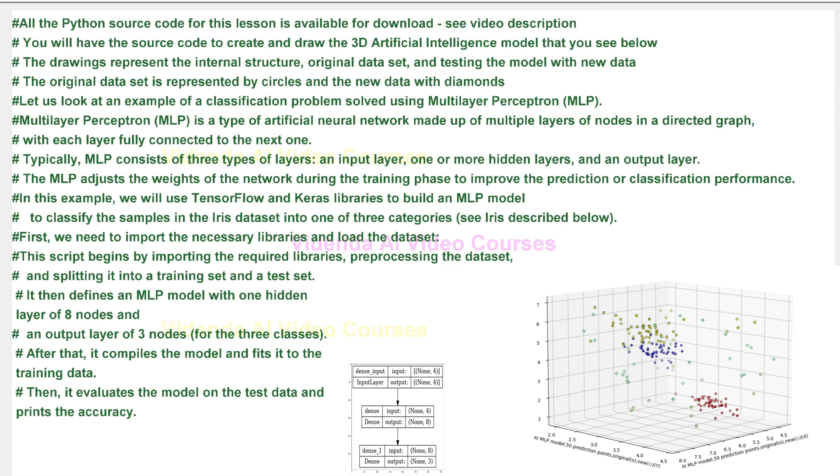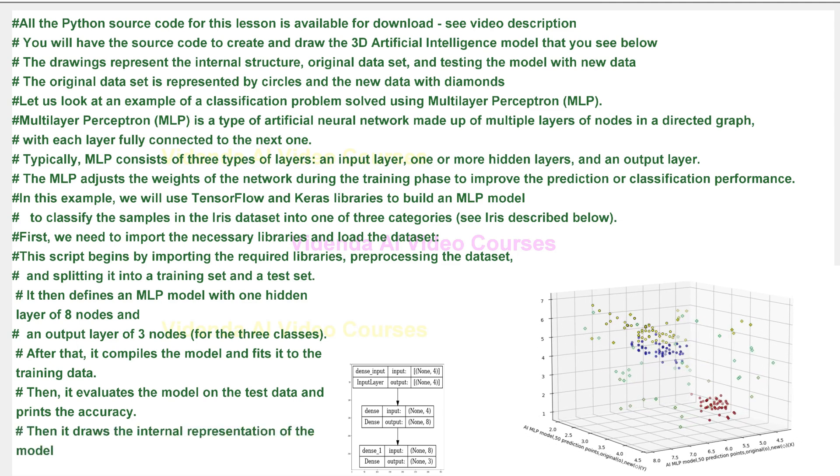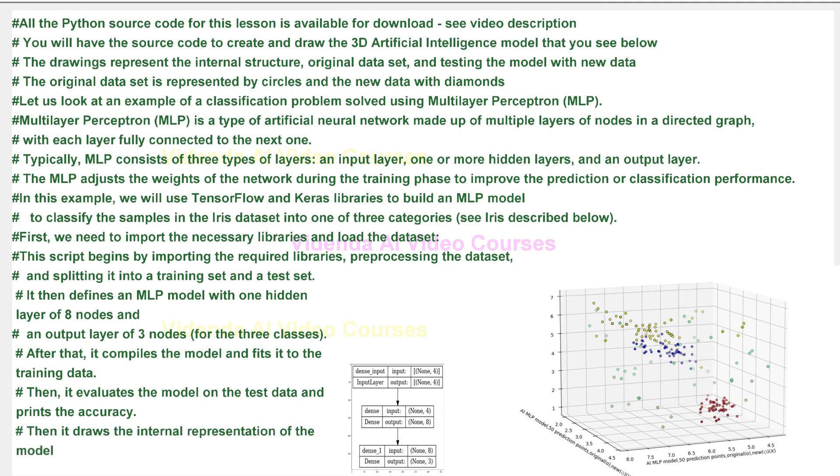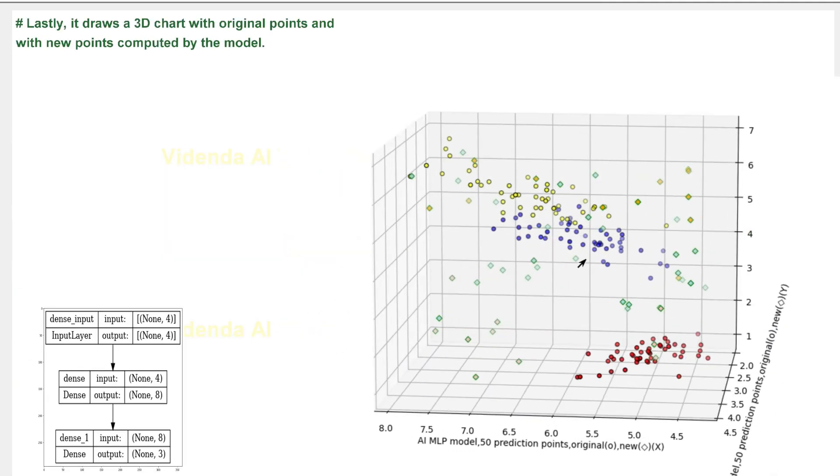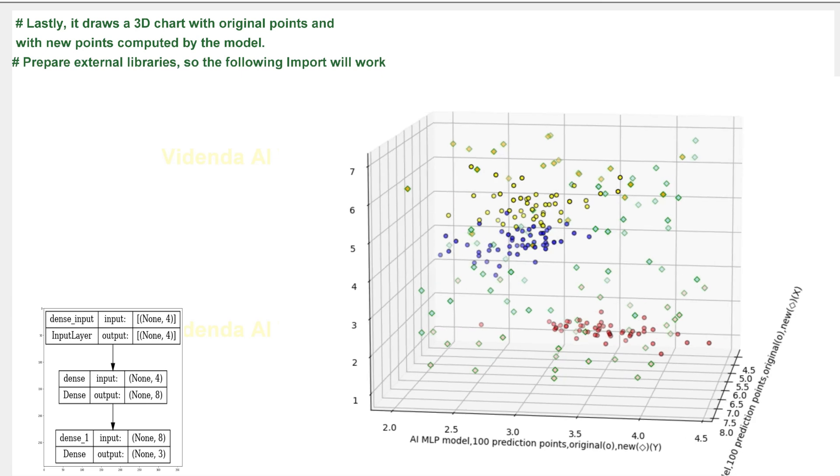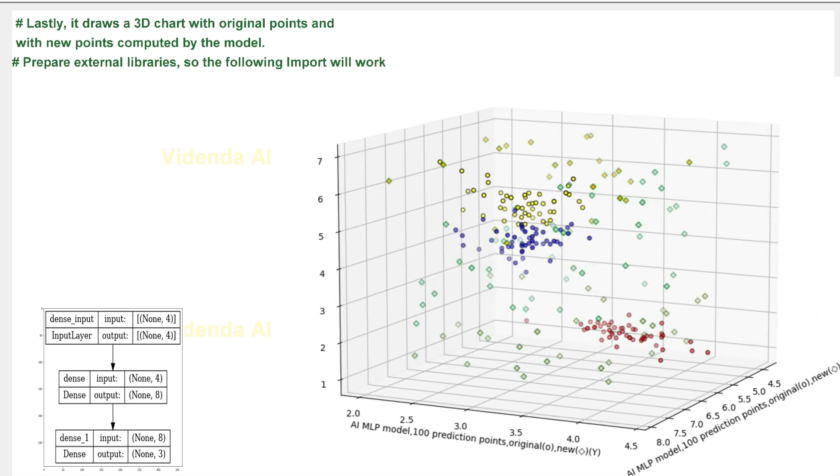Then, it evaluates the model on the test data and prints the accuracy. Then it draws the internal representation of the model. Lastly, it draws a 3D chart with original points and with new points computed by the model.